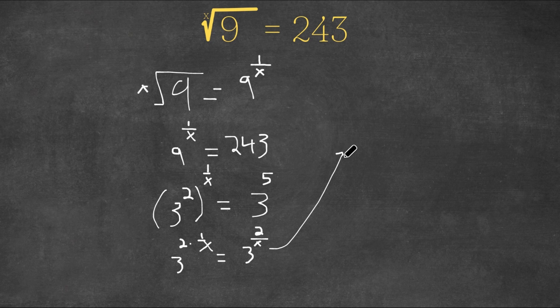So let me write this over here. We have 3 to the power of 2 over x is equal to 3 to the power of 5.